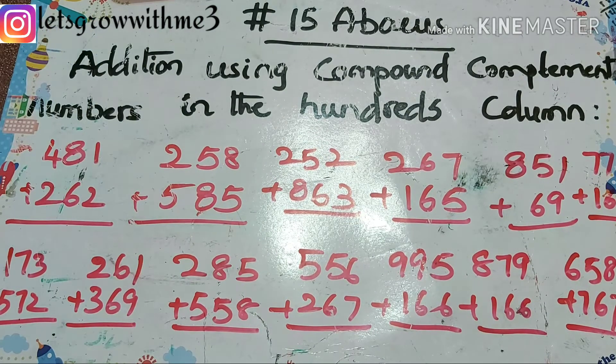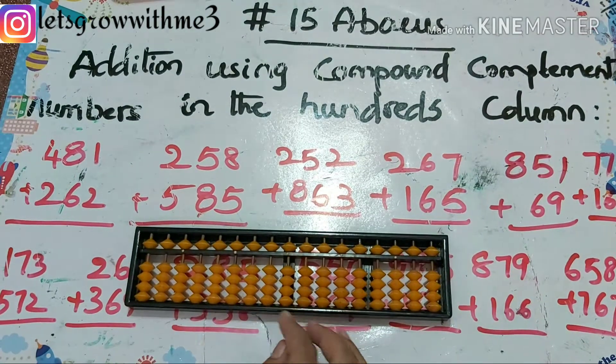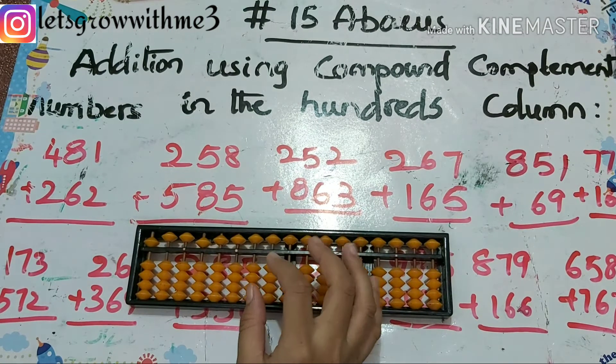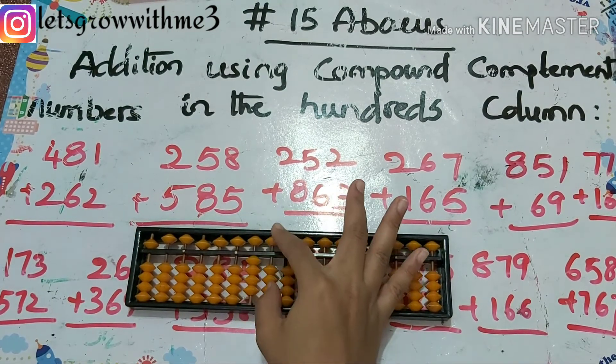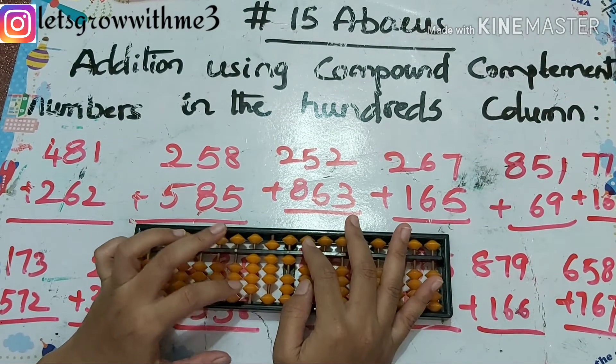First one: 481 plus 262. So first we have to see direct method if not possible go for small friend, not possible go for big friend, or else we have to go for combination.